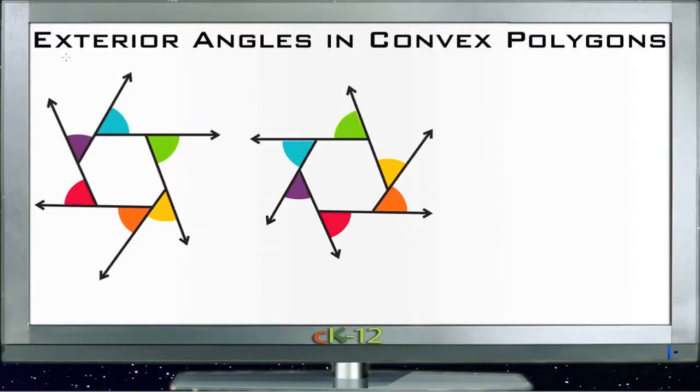Let's talk about exterior angles in convex polygons. Exterior angles are the angles formed in a polygon if you take the side of a polygon and continue it past where it intersects with the next side. If we see over here where the side of this polygon has been extended off, and this side here next to it has done the same thing, then the angle formed between them